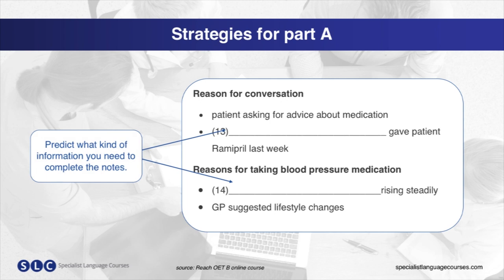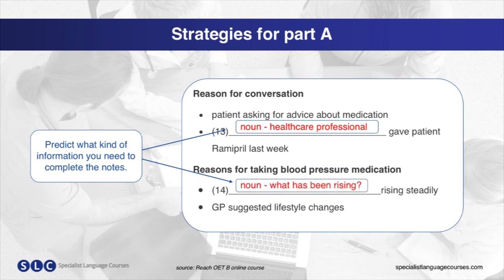Let's take a closer look at the first part. The first heading is 'reason for conversation,' and if we look closer at the gap in question 13, we can predict that you are listening for a noun — a person — and that it will probably be a healthcare professional. Under the next heading, 'reason for taking blood pressure medication,' we can see the gap for question 14. From the information provided, we can predict that we need to complete a noun phrase.